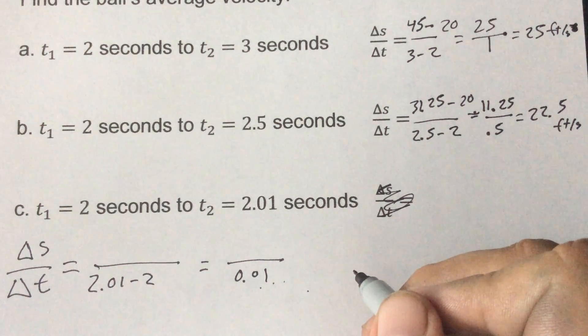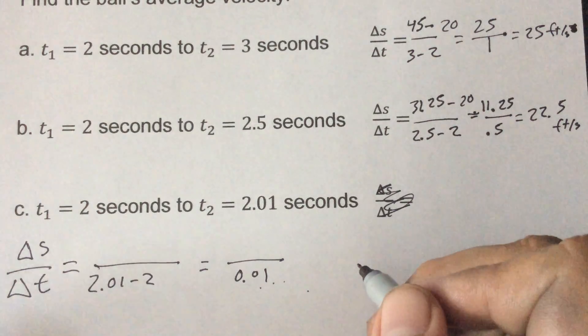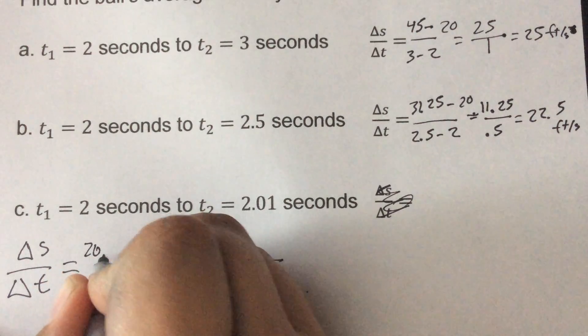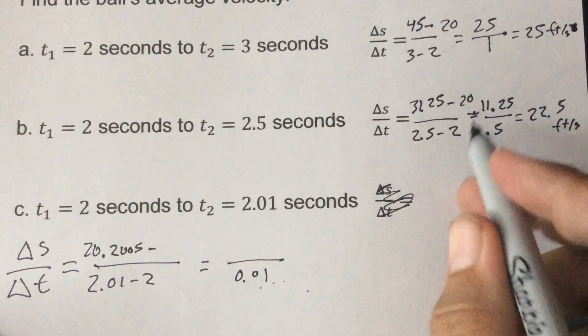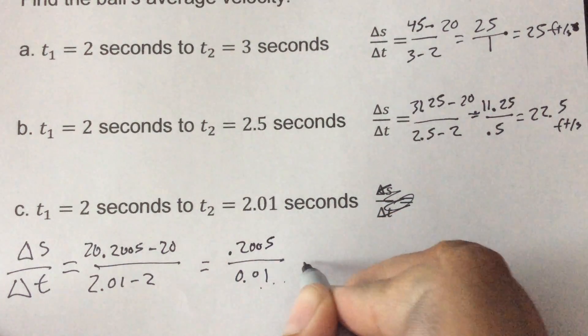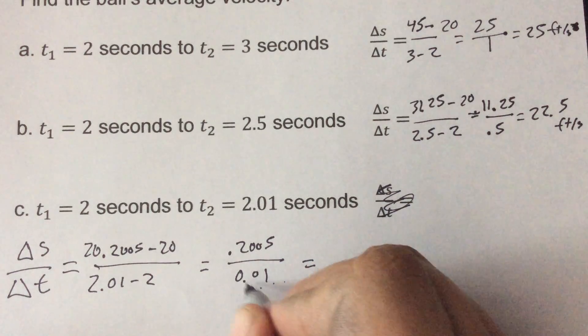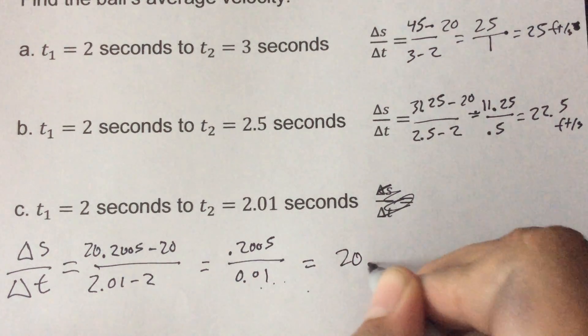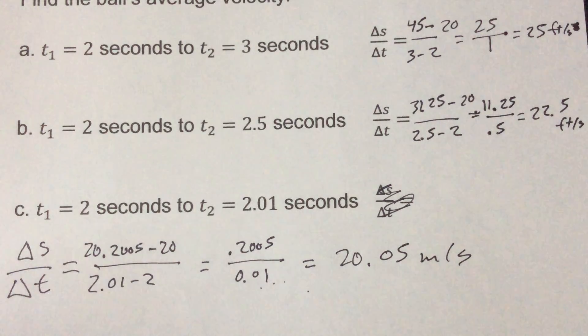So 2.01 squared times 5 would be 20.2005 minus, well we already know what 2 is, 2 is 20. So you get 0.2005 on top. So 0.2005 divided by 0.01, which would really be like move the decimal over twice, and we would get 20.05. Again that's, we'll switch up to meters per second this time since we didn't get this one.